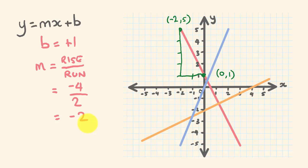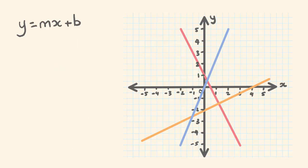Now let's put the rest of the equation together. y equals mx plus b — y is equal to m, which is minus 2, times x, plus 1. Nice and simple. Let's go through a couple more examples.